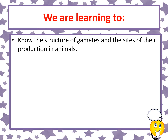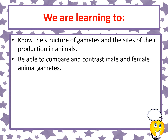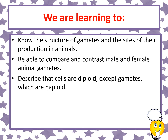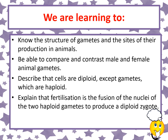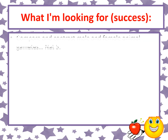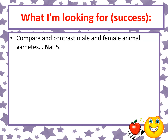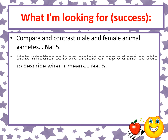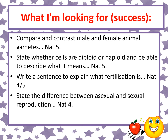Today we're going to be learning about reproduction in animals. Our learning intention is to know the structure of gametes and the sites of their production in animals, be able to compare and contrast the male and female animal gametes, describe that cells are diploid except gametes which are haploid, and explain that fertilization is the fusion of the nuclei of two haploid gametes to produce a diploid zygote, and know the difference between sexual and asexual reproduction.